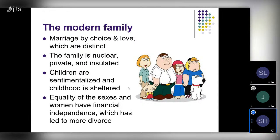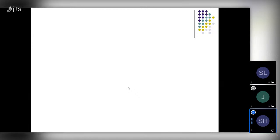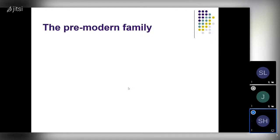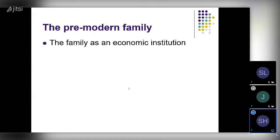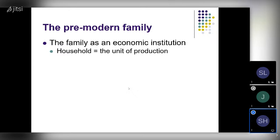That's the modern family. Now let's go back to the pre-modern family and work through how it became the modern family. For the vast majority of human history, the family was primarily an economic institution. The household was the economic unit of production. Today we think of the firm as being the unit of production, but for most of human history it was the household. The easiest way to think about this is agricultural farm families, where the household is not just the place where children are raised but also where production takes place.